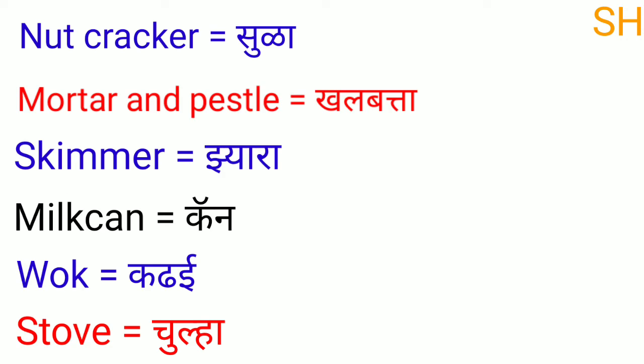Grindstone means pardot. Cracker means shula kiwa aata kipta. Mortar and pestle means khalbatta. Skimmer means jhara. Milk can means cam. Oak means kadai. Stove means chula.